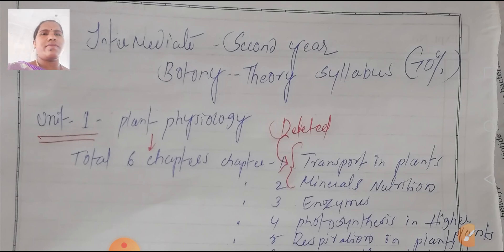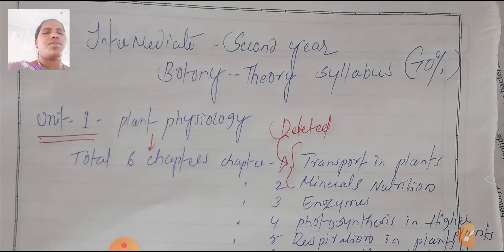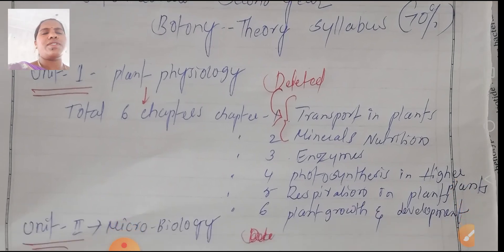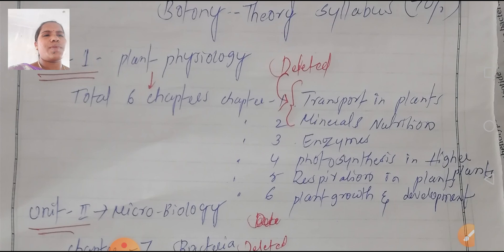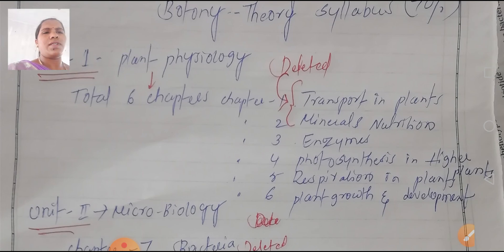This content is prepared for students going to write the second year exam in the subject of Botany. Intermediate Second Year Botany theory is 70% content. Unit 1, Plant Physiology, has a total of six chapters: transport in plants, mineral nutrition, enzymes, photosynthesis in higher plants, respiration in plants, and plant growth and development. Chapters 1 and 2 are deleted.